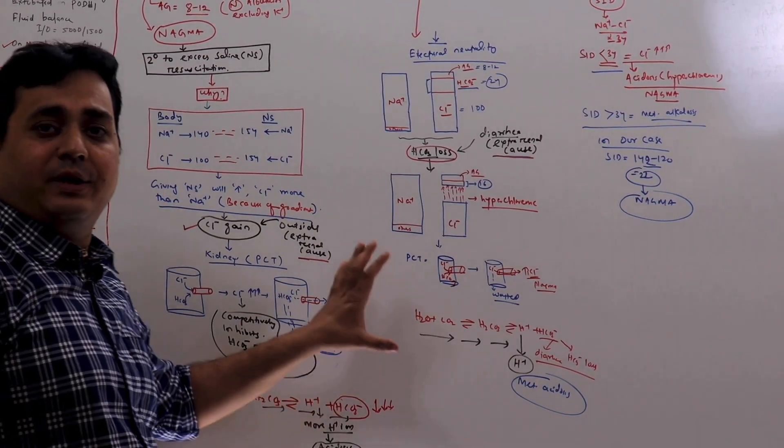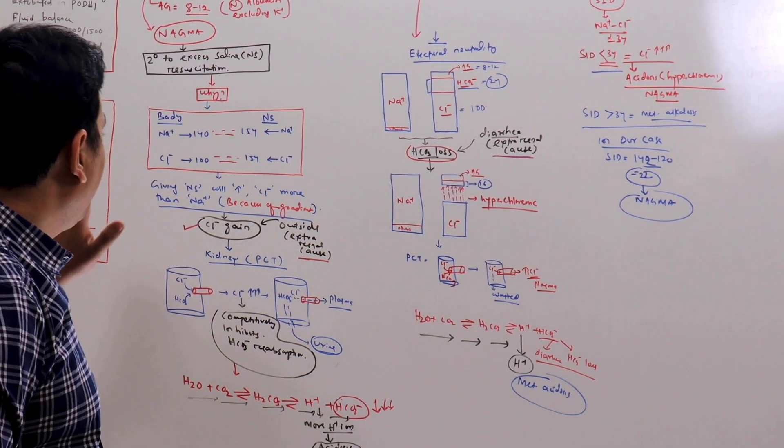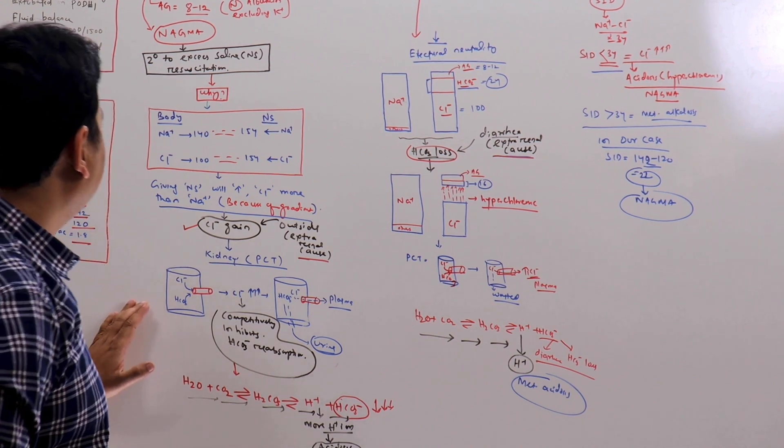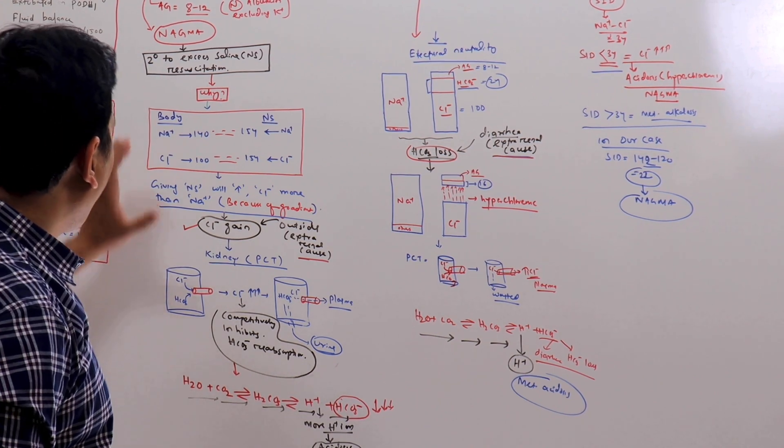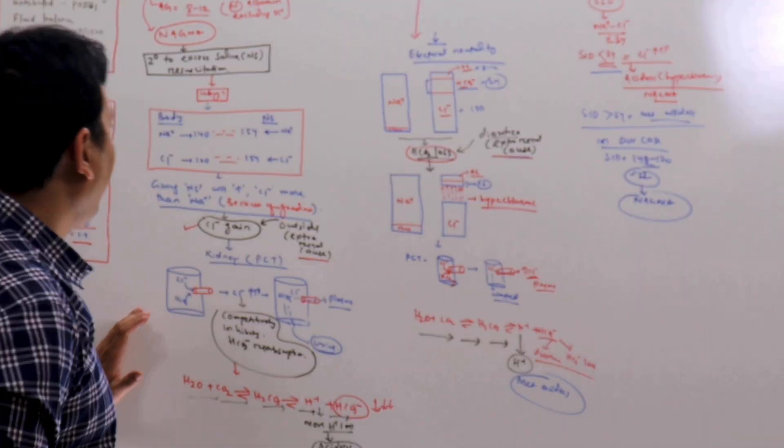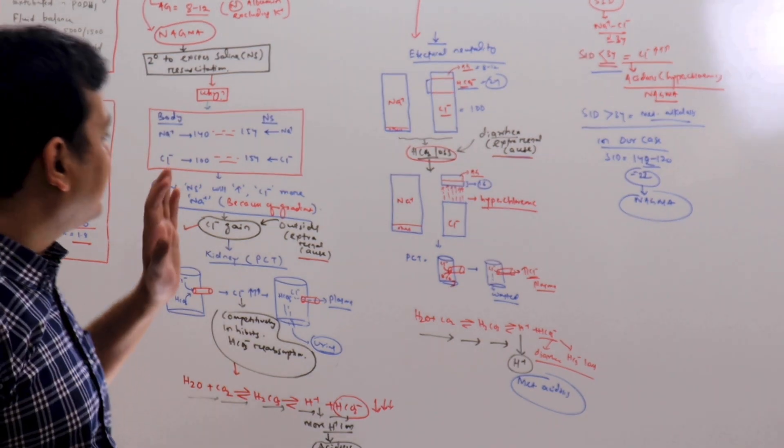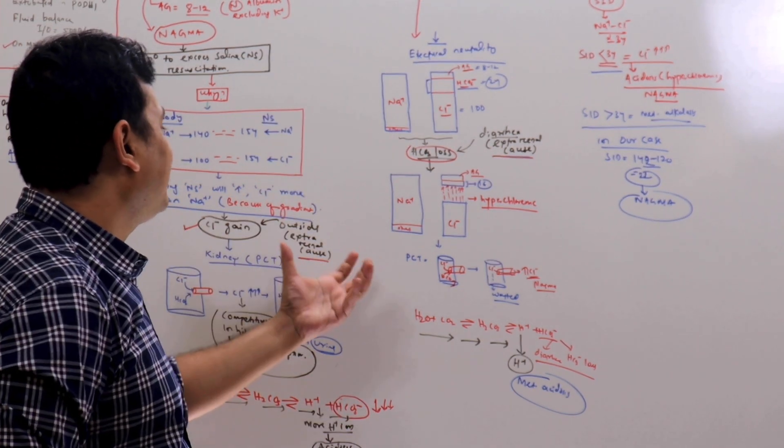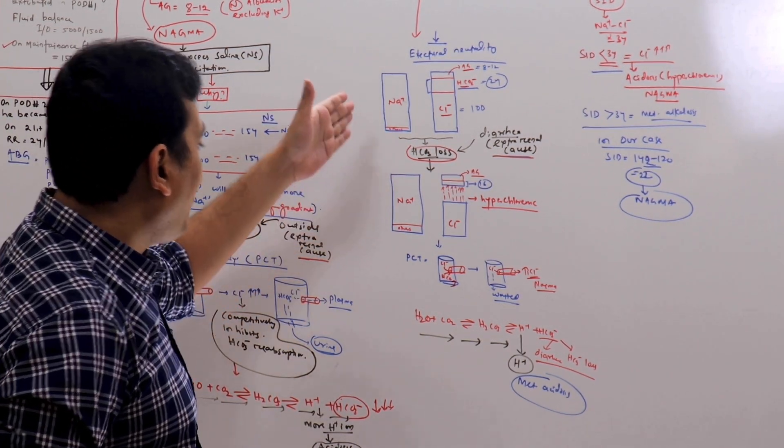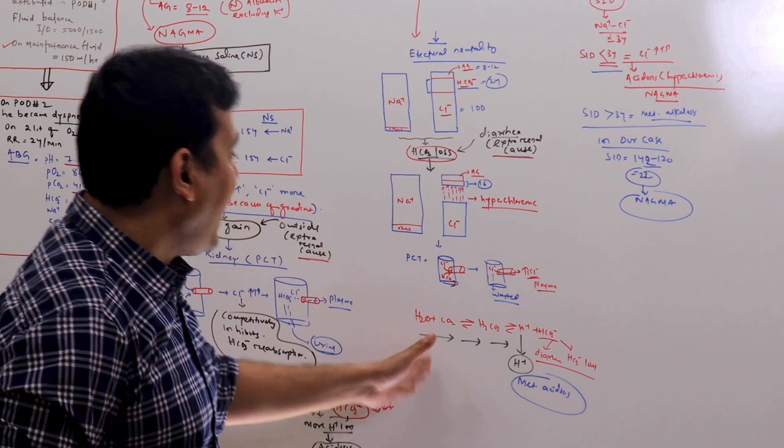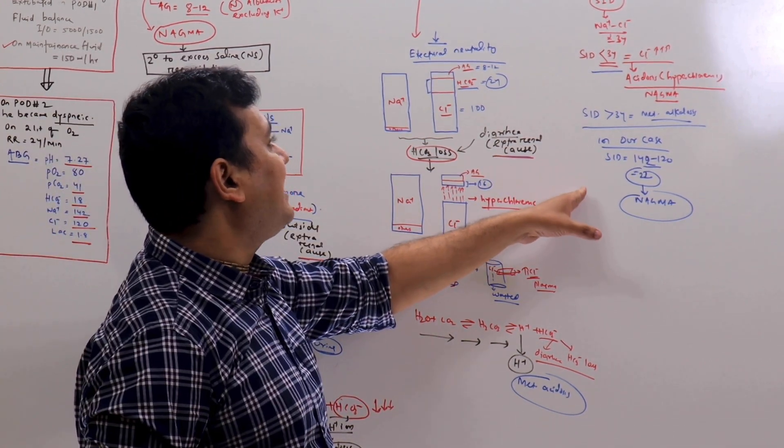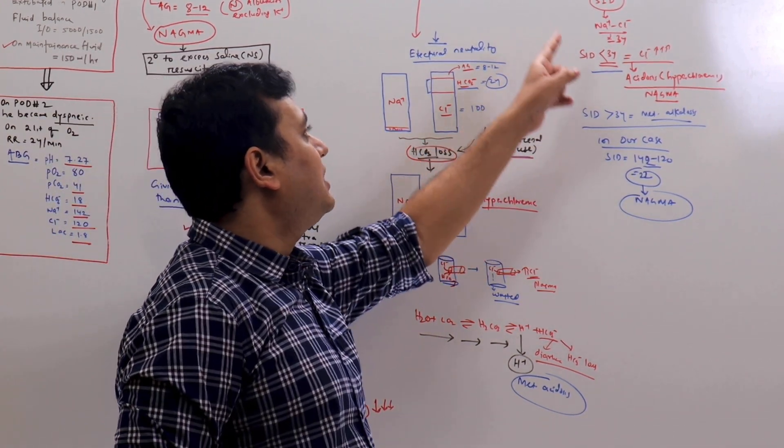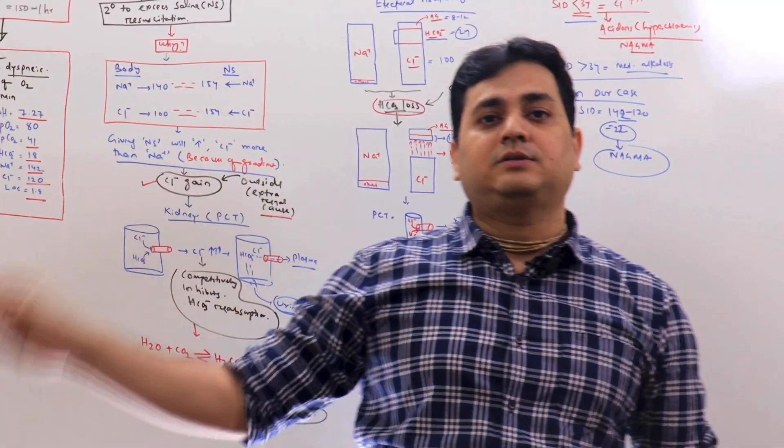In our discussion today, we have discussed when we give normal saline to a patient in massive amount, why there is acidosis, normal anion gap acidosis. In the same way, when there is a diarrhea patient, there is bicarb loss, why there is metabolic acidosis. And how quickly you can diagnose the metabolic acidosis by using the standard ion difference. Thank you very much.